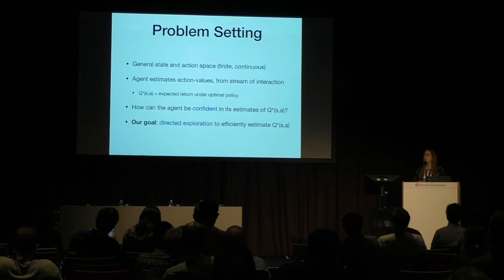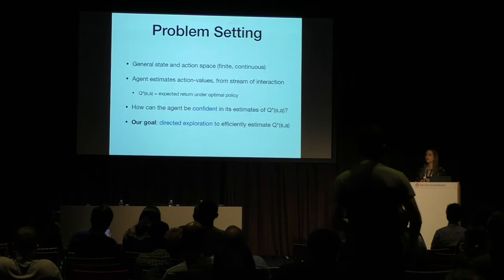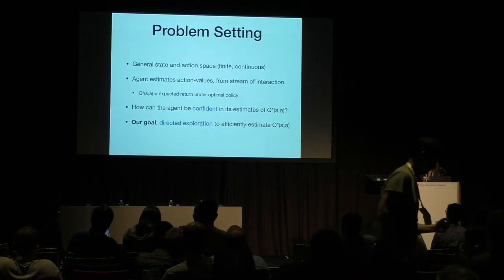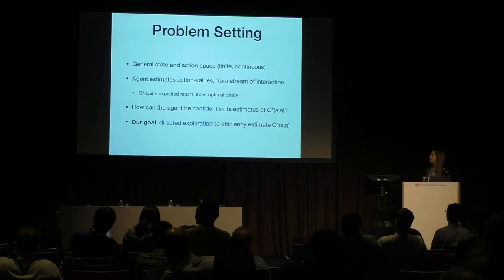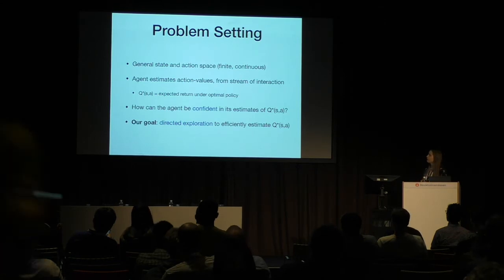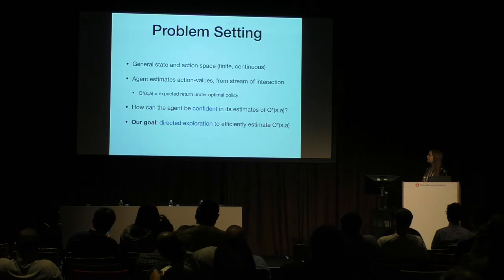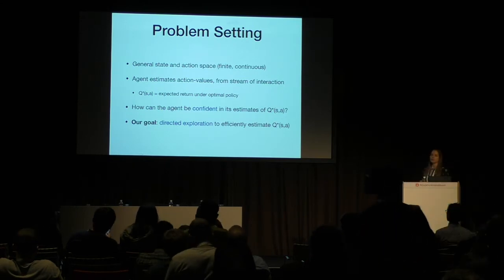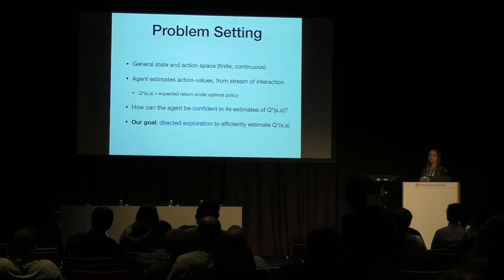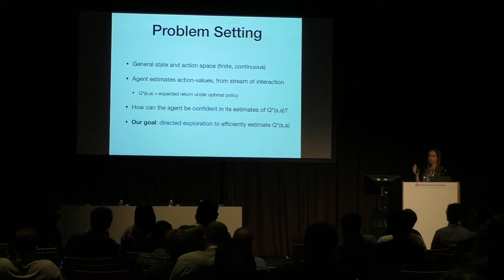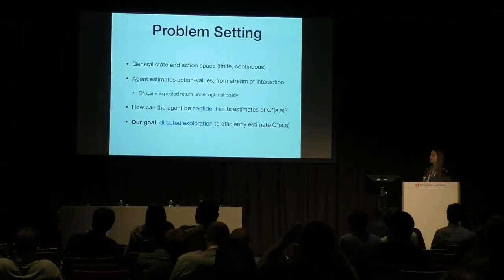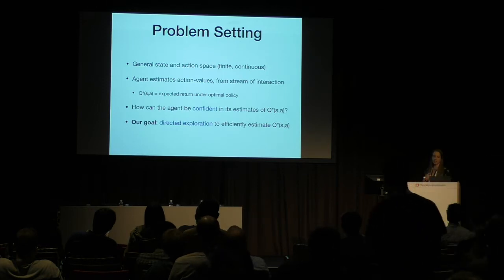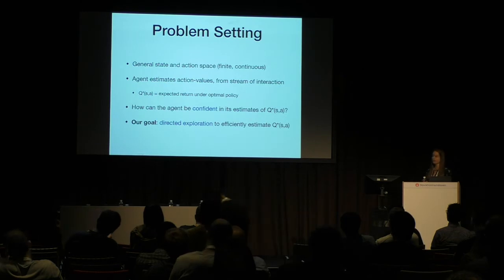Stepping through upper confidence bounds for action values in reinforcement learning — I'm assuming you haven't thought much about them, so I'll step through simpler settings first and then explain why it's more complicated in RL. We have a general state and action space, could be finite or continuous, in a Markov decision process. Our agent's goal is to estimate the optimal action value Q*, the expected return under the optimal policy. We want data-efficient, directed exploration so the agent reaches Q* as fast as possible without converging to something suboptimal.